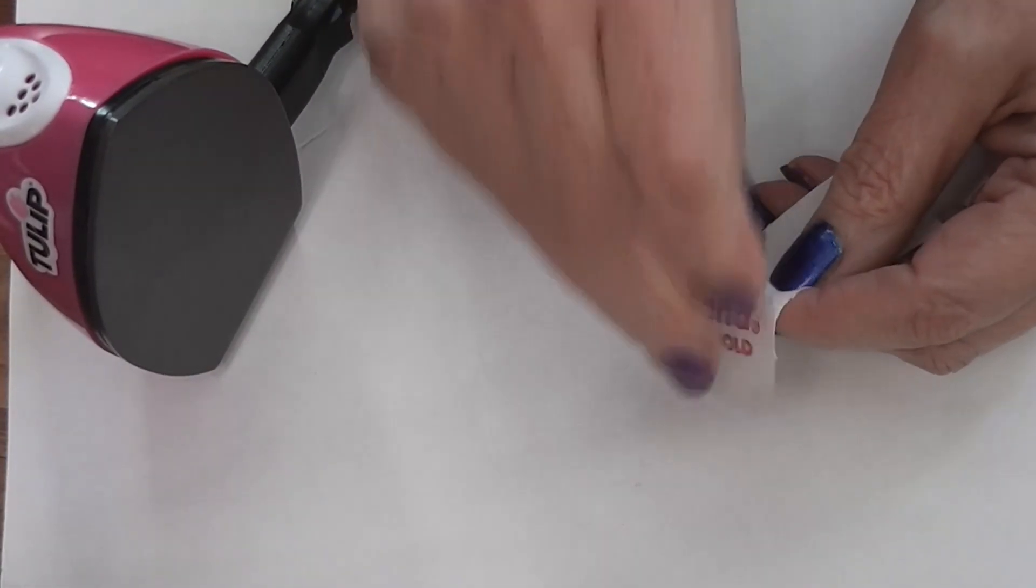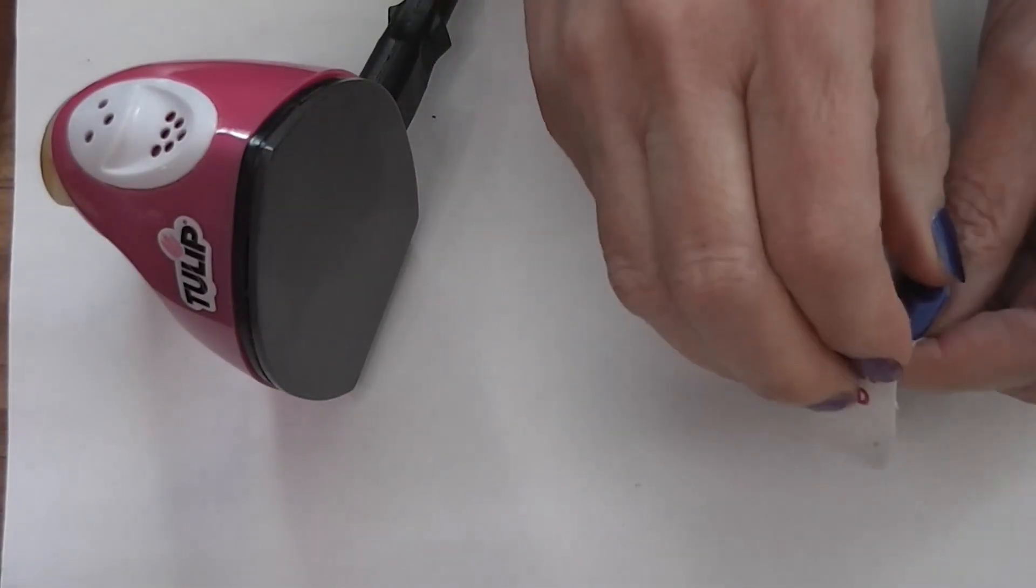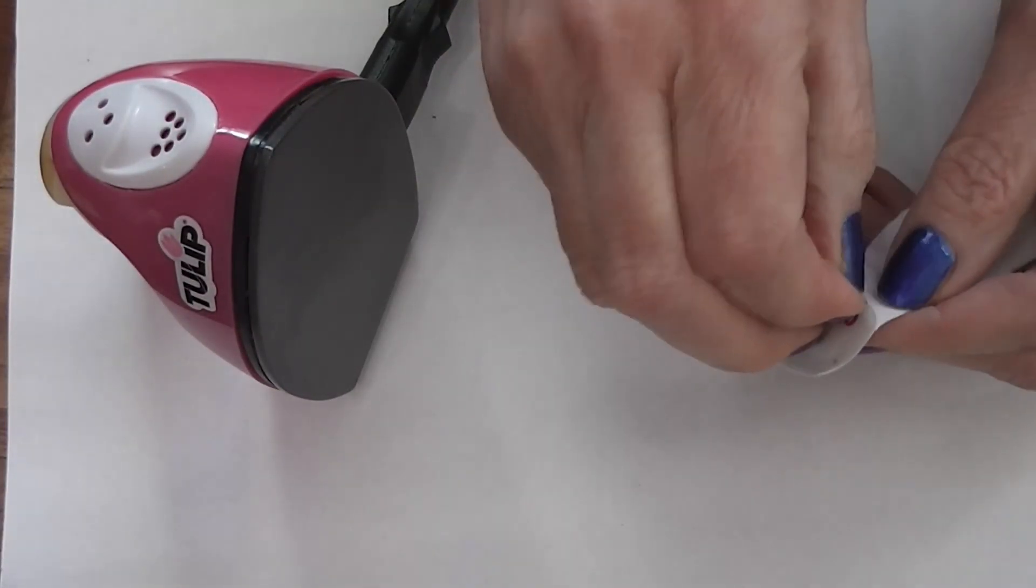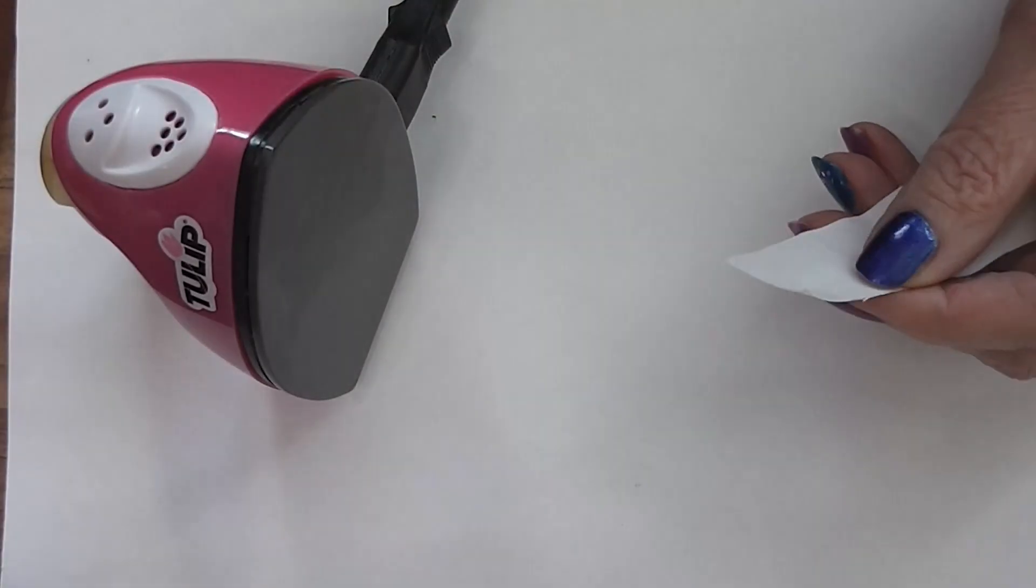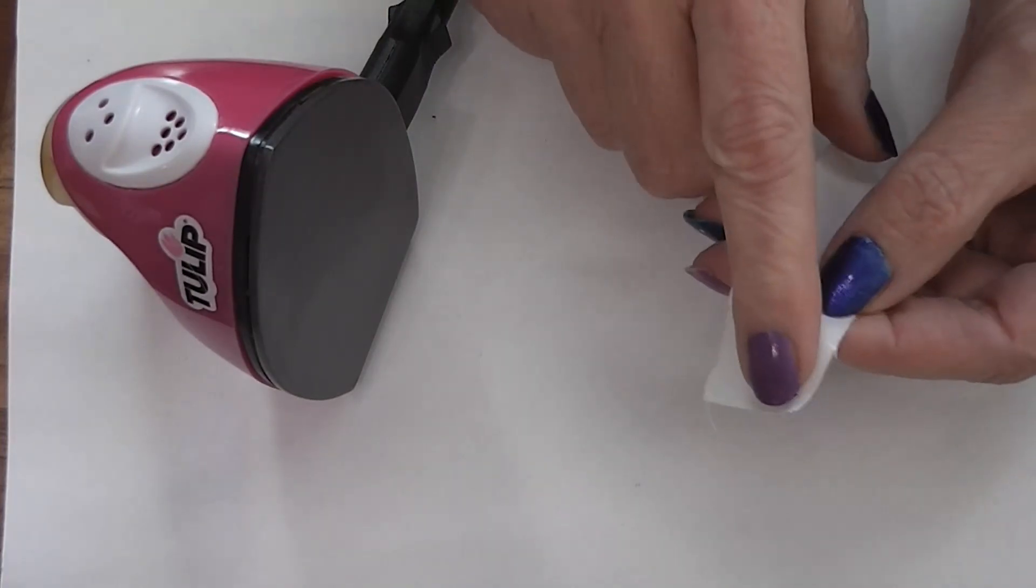So we iron it on with a hot iron. I like to use this little craft iron, this little one by Tulip, simply because I don't have to dig out my big iron that I use for sewing and I'm not getting weird things on my good iron.